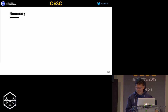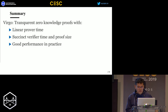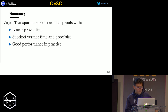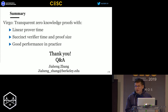In summary, we proposed a new transparent zero-knowledge proof system, Virgo, with linear prover time, succinct verification time and proof size, and it has really good performance in practice. Thank you.